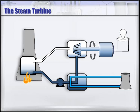Steam turbines create electricity in four key steps. First, a fuel is combusted to create heat energy. The heat is used to convert water in a boiler to high-pressure steam.